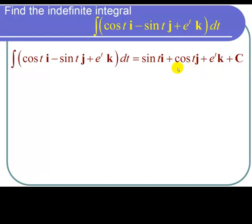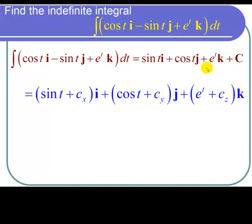So I can rewrite this vector-valued function as the sine of t plus c sub x i plus the cosine of t plus c sub y j plus e to the t plus c sub z k. And I'm done with the problem.